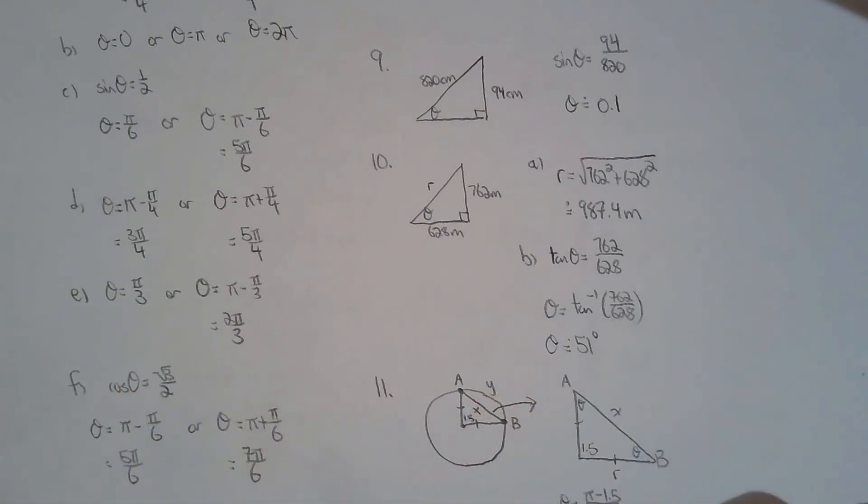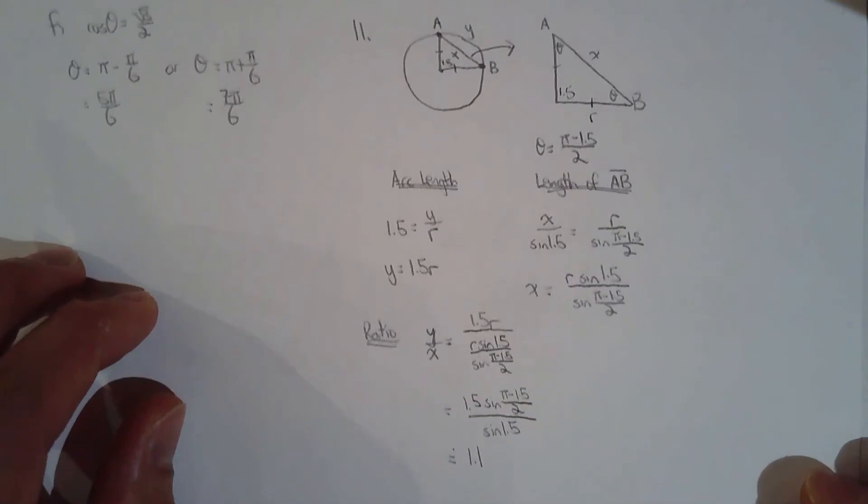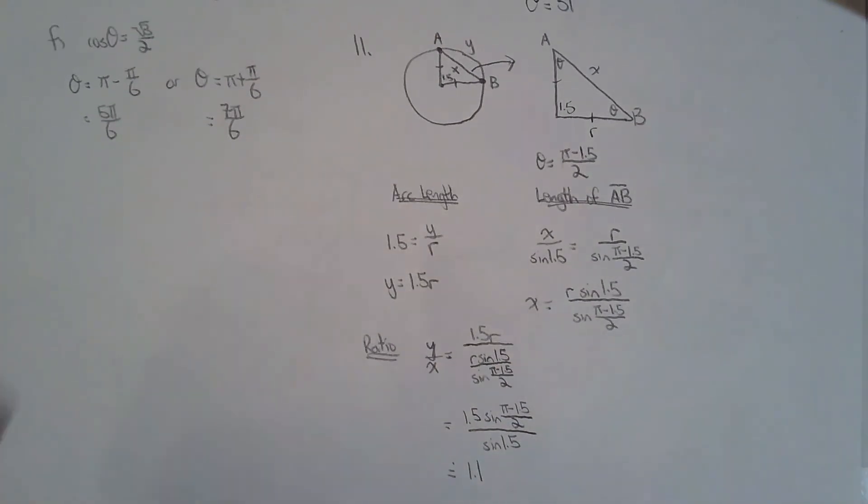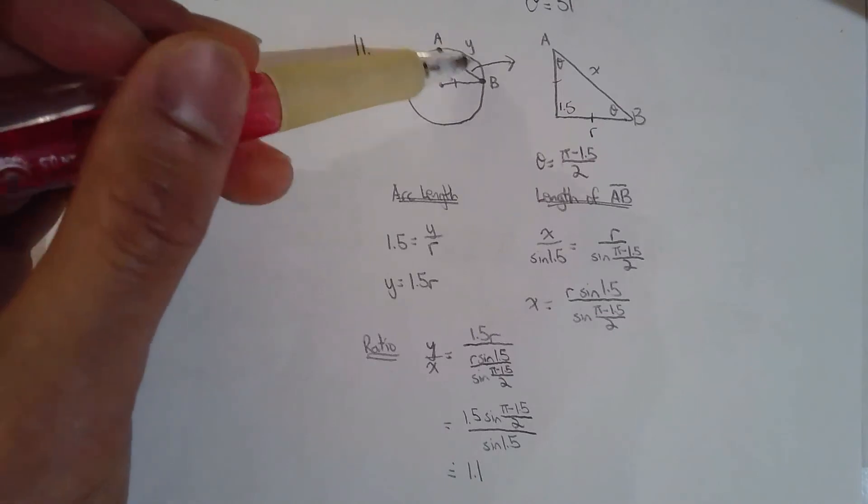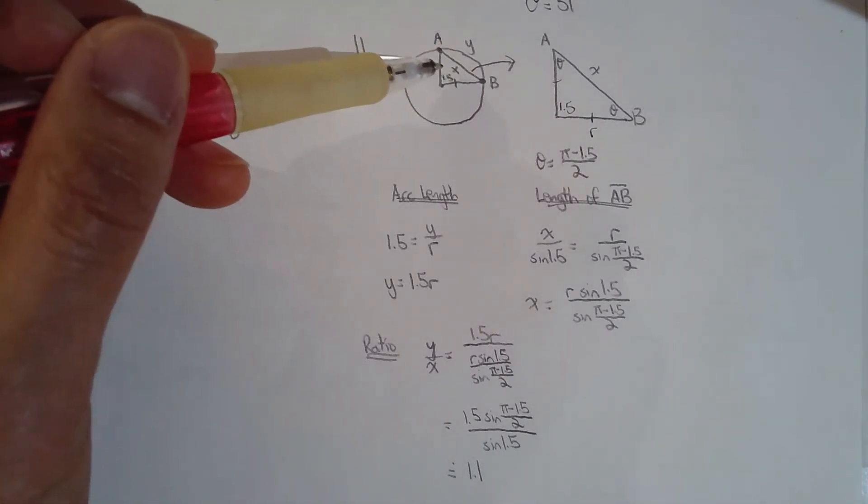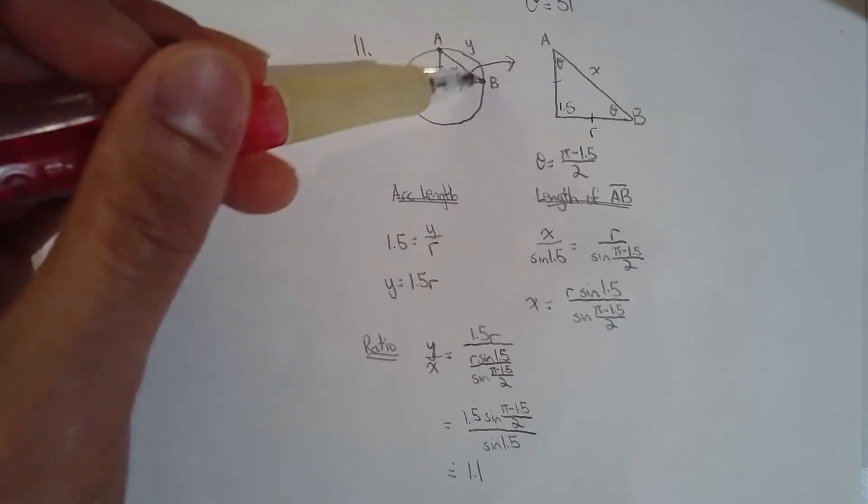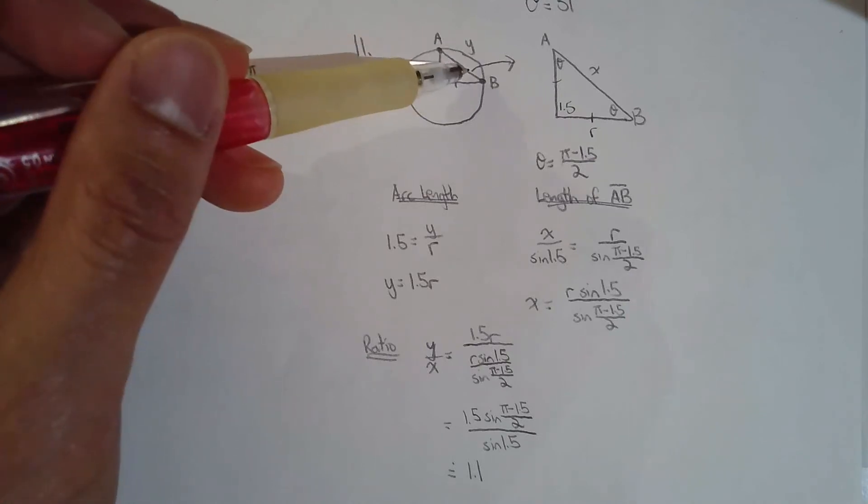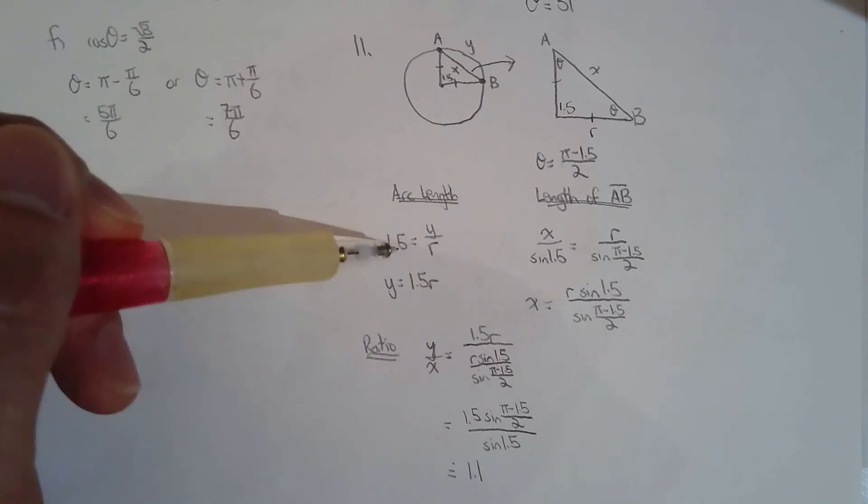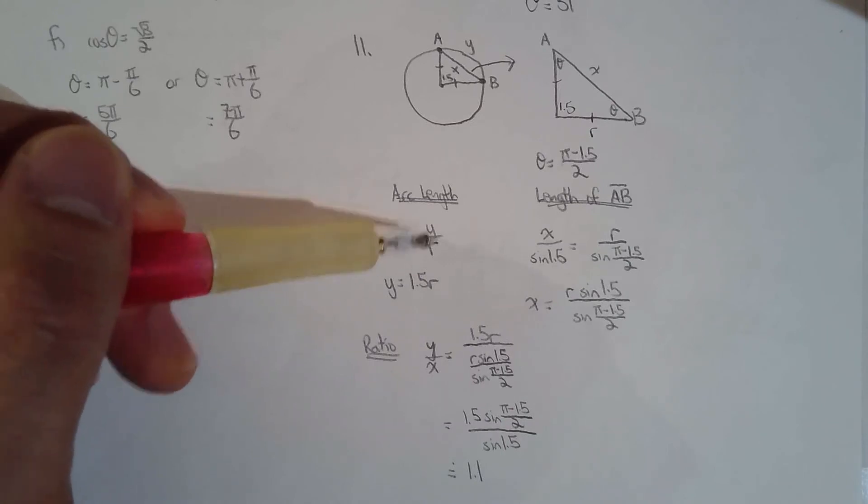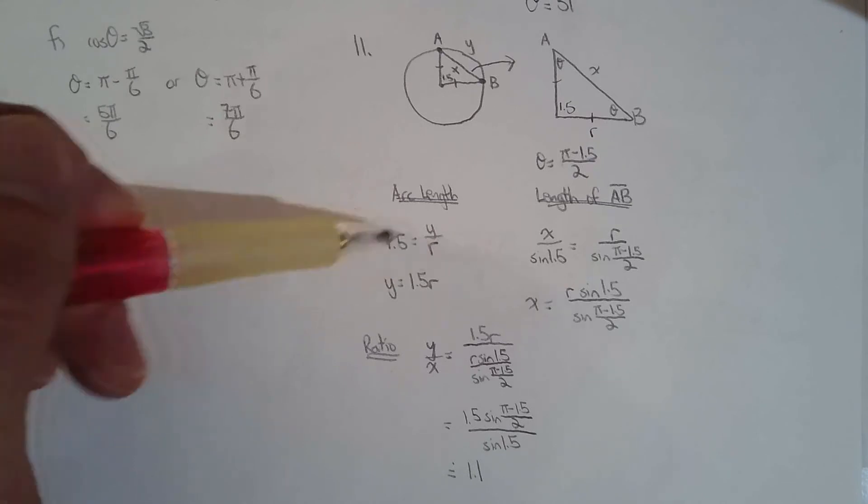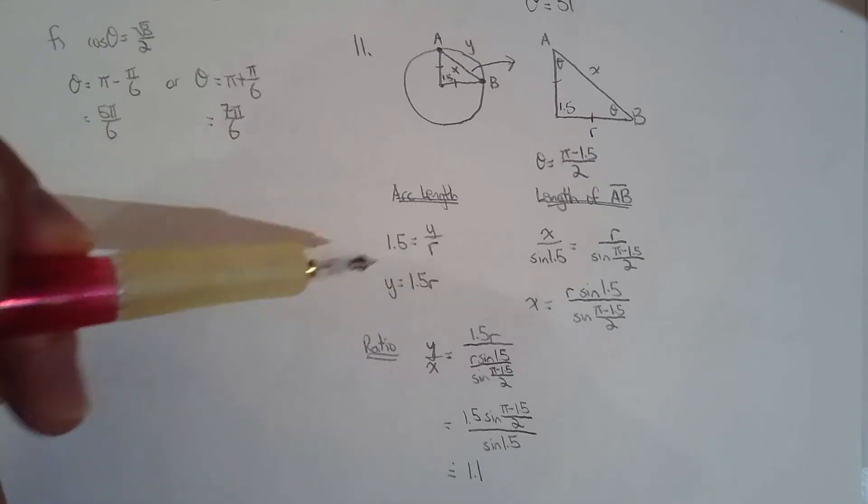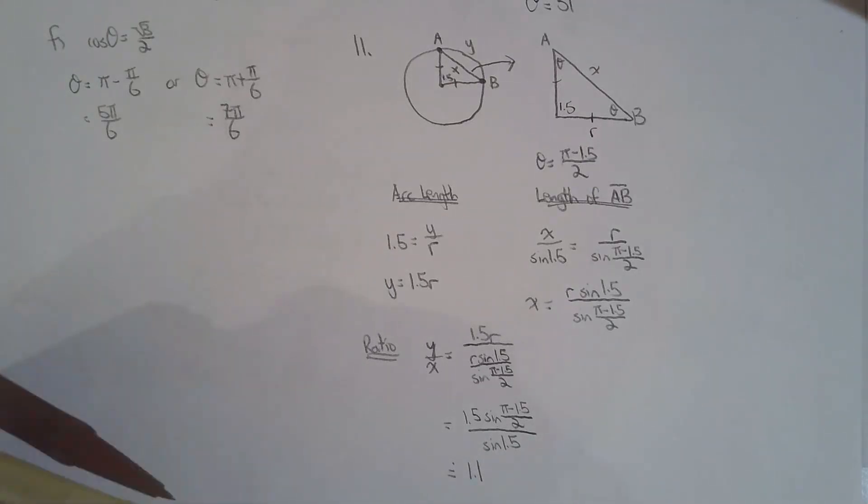Okay, so of all the questions, 11 is the hardest. So how do we do 11? You want a ratio of the arc length to the line segment. Let's do the arc length first because that's actually the easier one. The arc length, you can use the definition of radians to solve for the arc length, because 1.5 radians equals the arc length, which I've labeled as y, over the radius of the circle. So if you rearrange it, y, the arc length, must be equal to 1.5r, 1.5 times the radius.